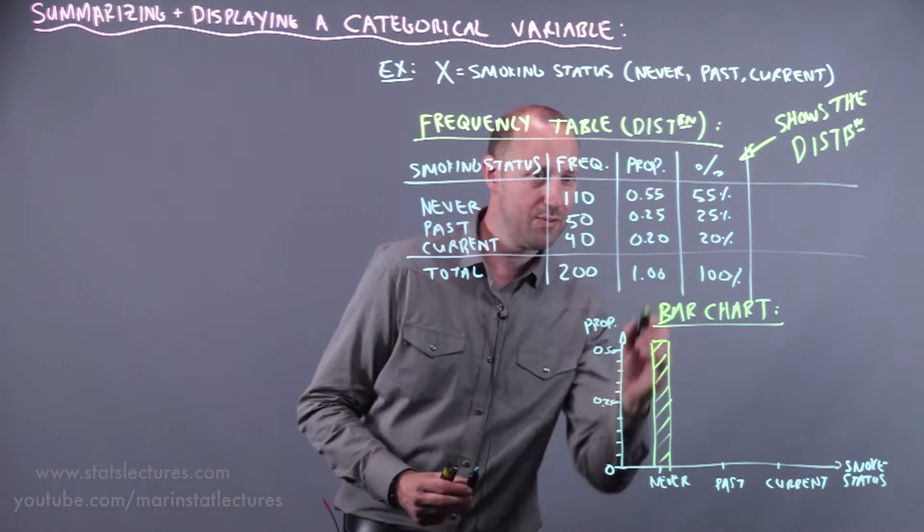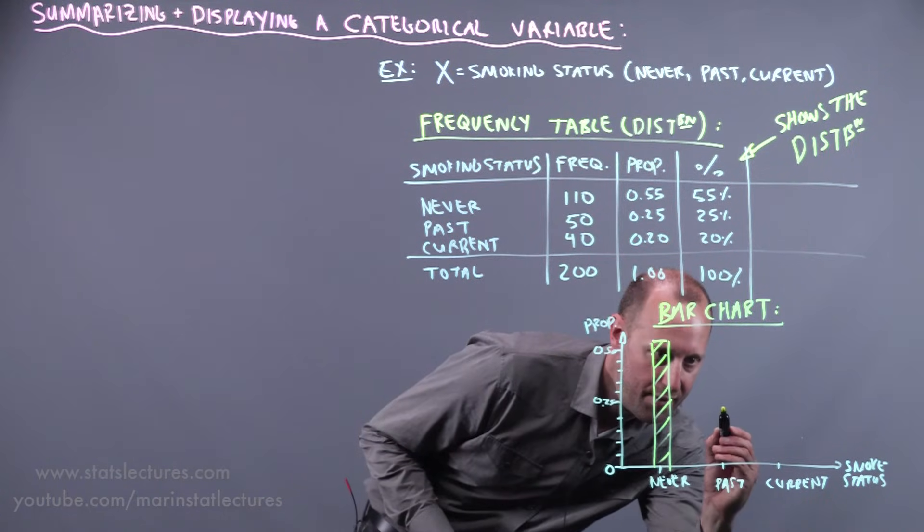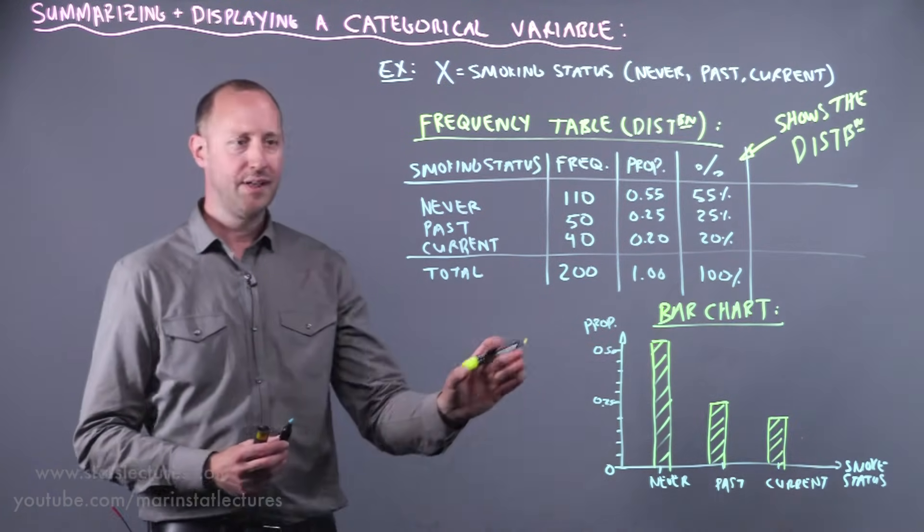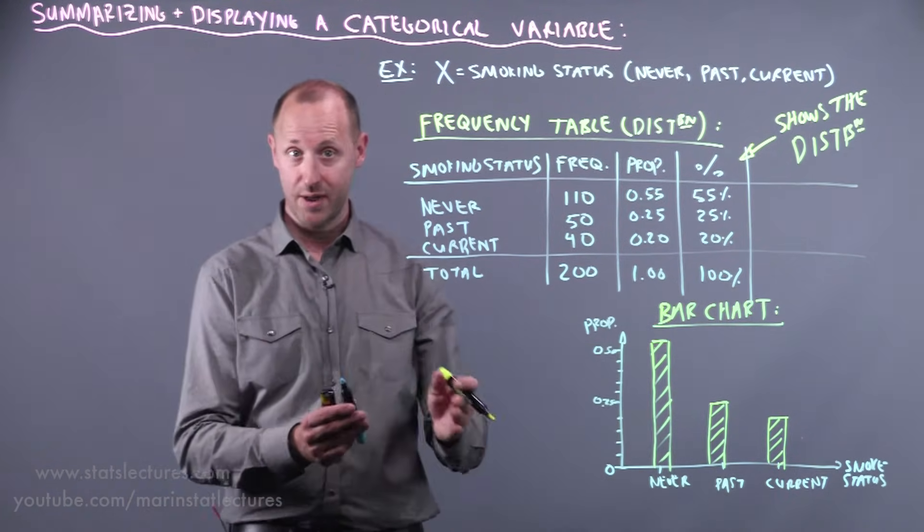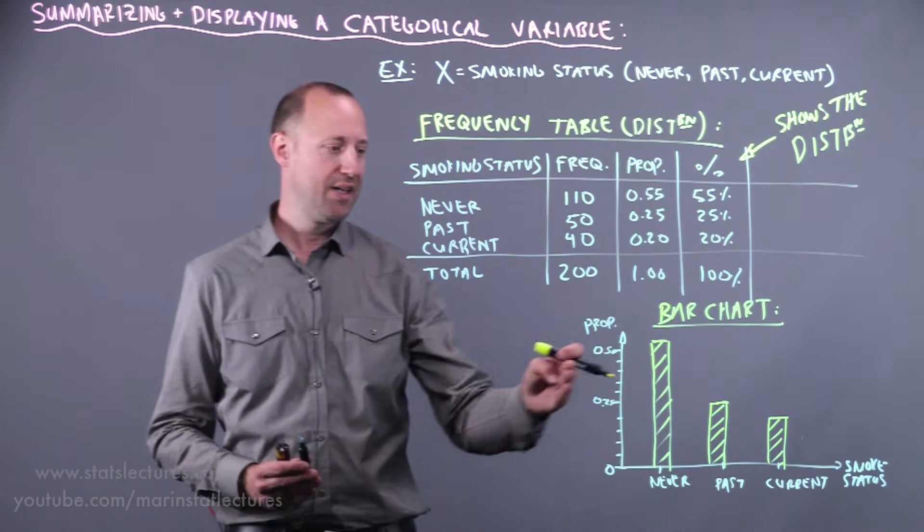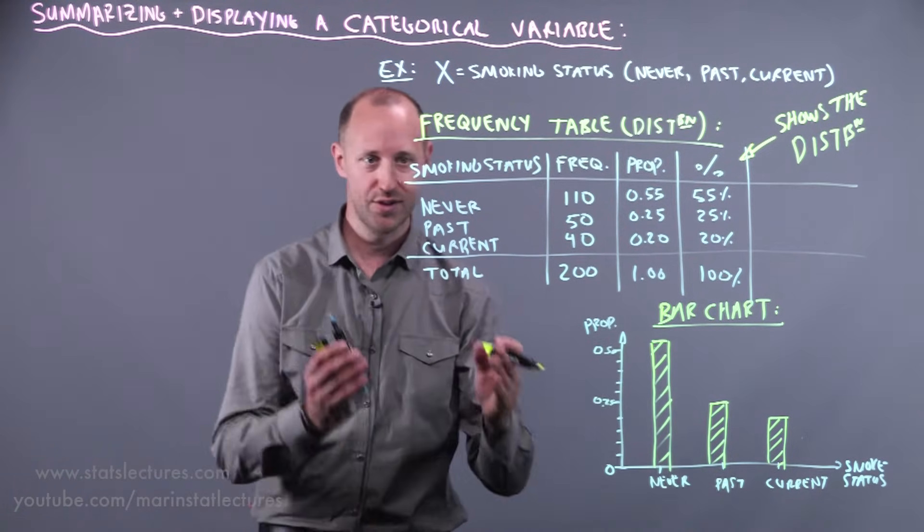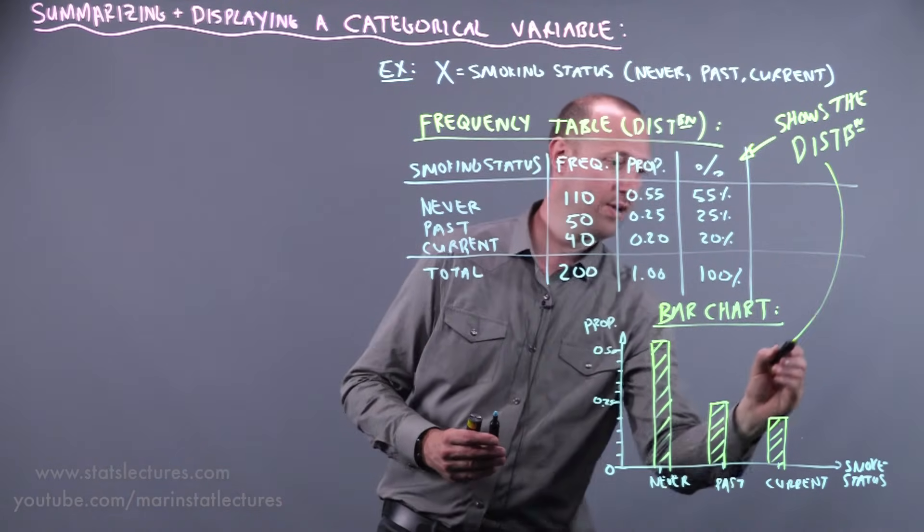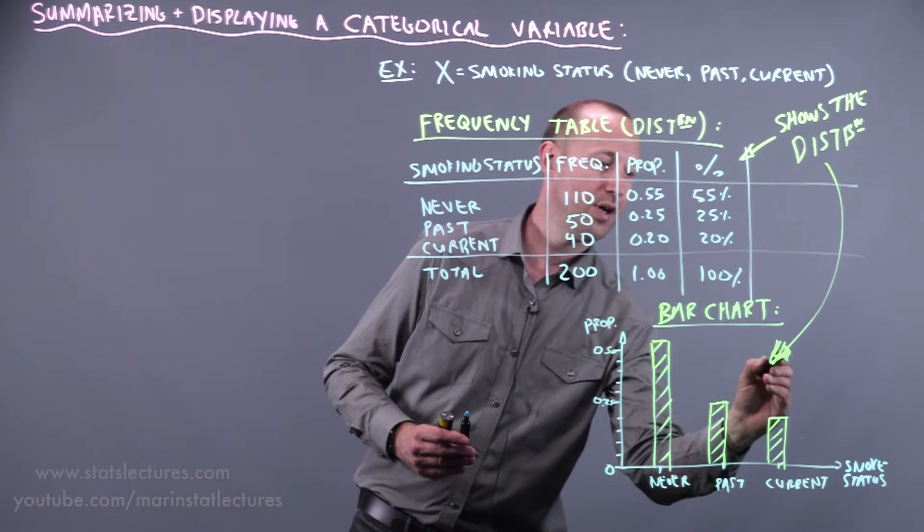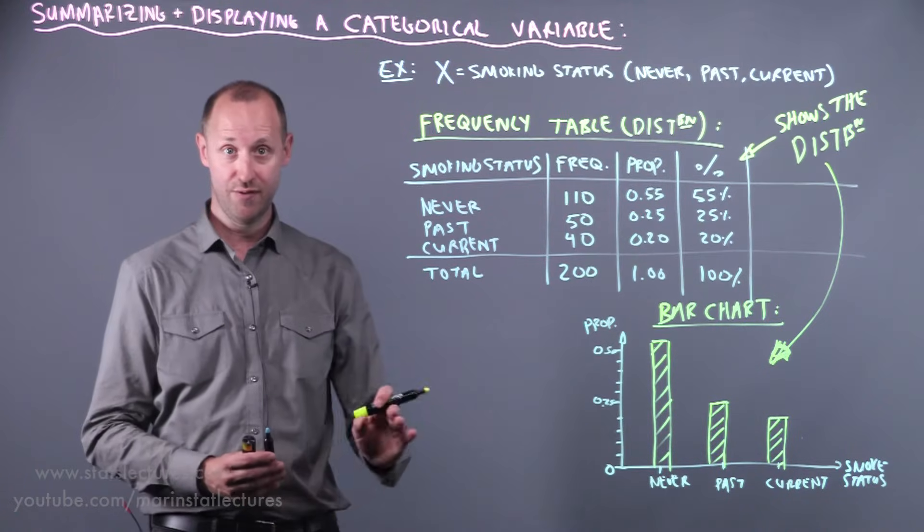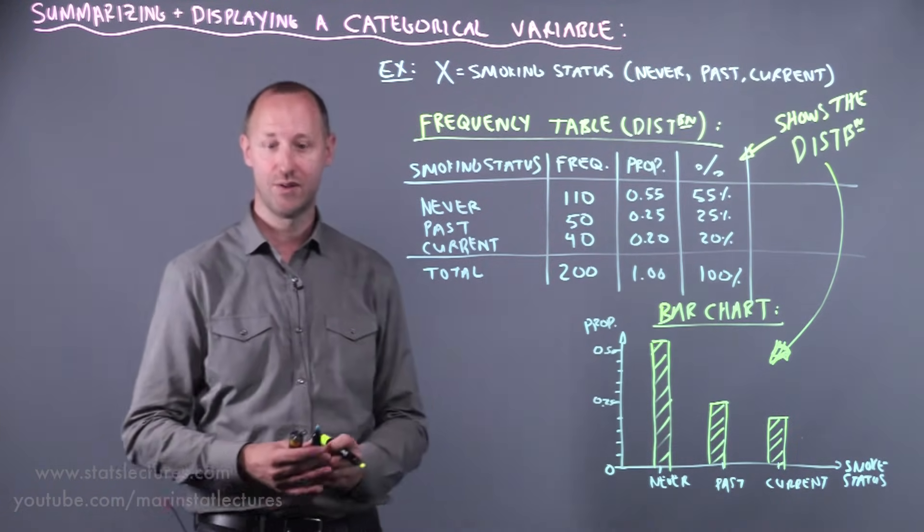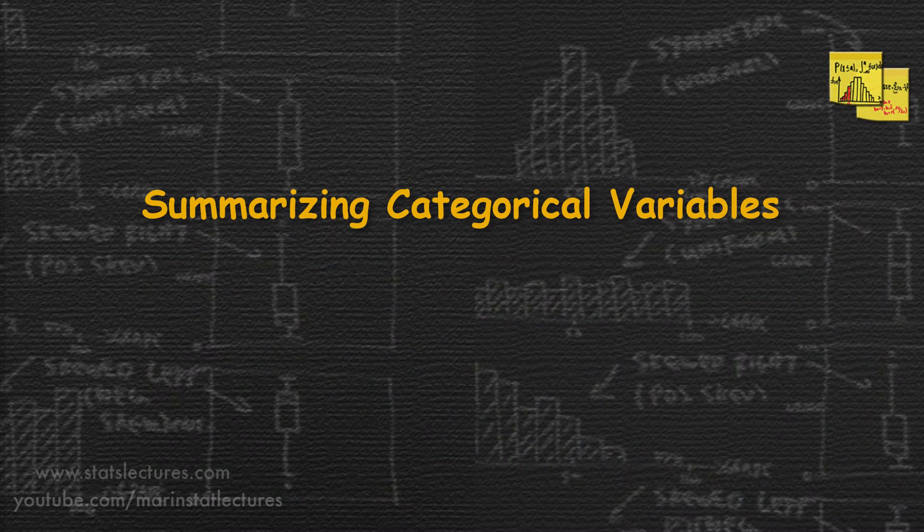For the past smokers, a proportion of 0.25, and the current smokers a proportion of 0.20. Now in this plot, these bars are separated or spaced between them to indicate that these are separate categories—there's no continuity between the two. As noted before, this also helps show the distribution for this variable: how are people distributed amongst the different categories or levels?